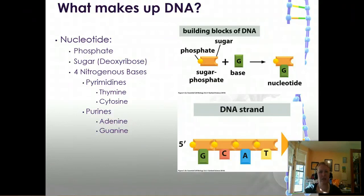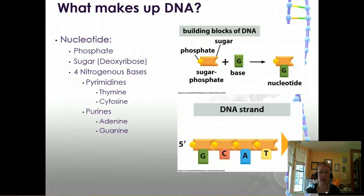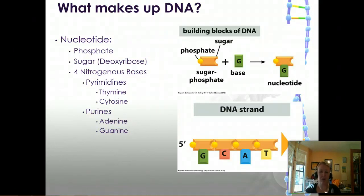The four bases fall into two different groups: pyrimidines and purines. The pyrimidines are thymine and cytosine, and the purines are adenine and guanine. They will always pair one pyrimidine to one purine, and we'll look at that on the next slide.